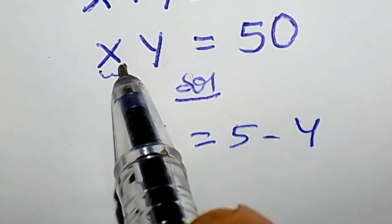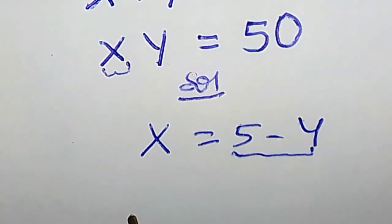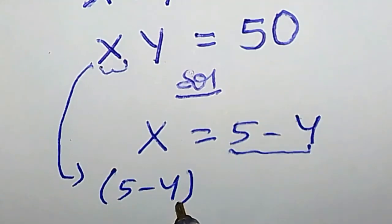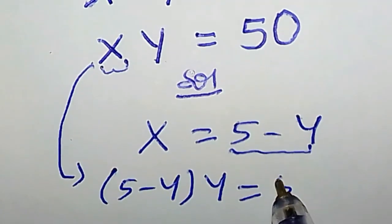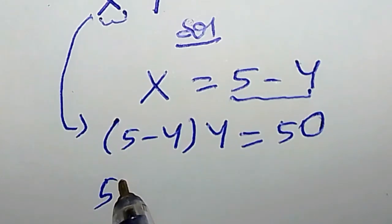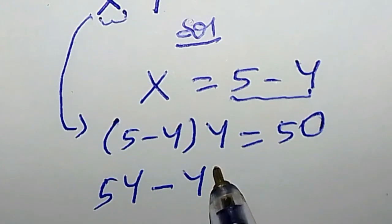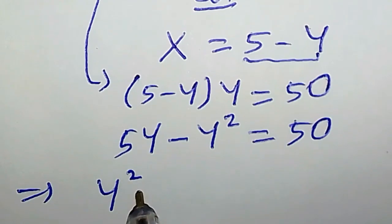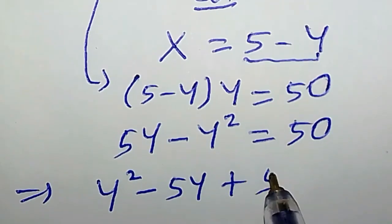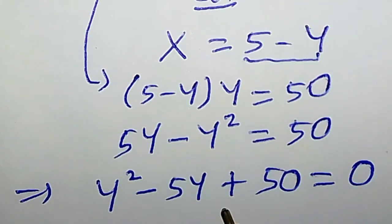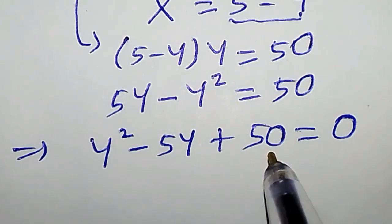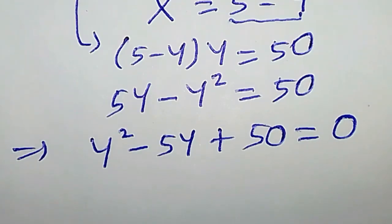Now let us replace x with 5 minus y, so that means we have (5 minus y) times y equal to 50. Expanding: 5y minus y squared equals 50. Rearranging this equation, we have y squared minus 5y plus 50 equals 0. You will observe that this quadratic equation is not factorizable.